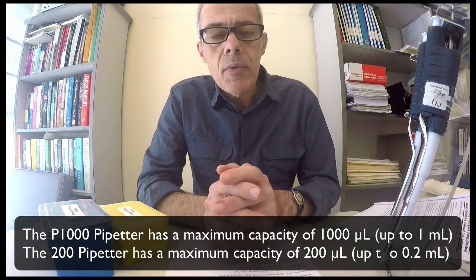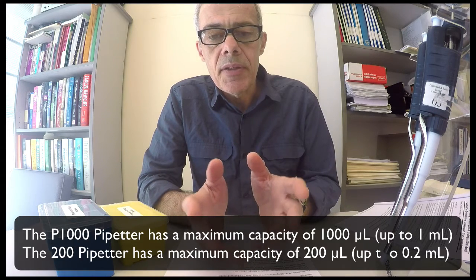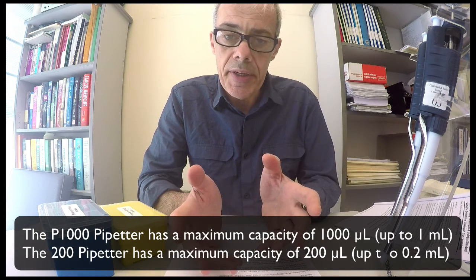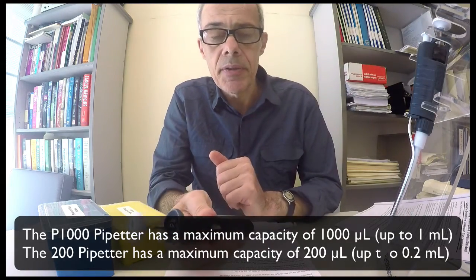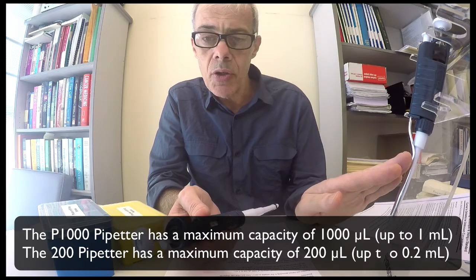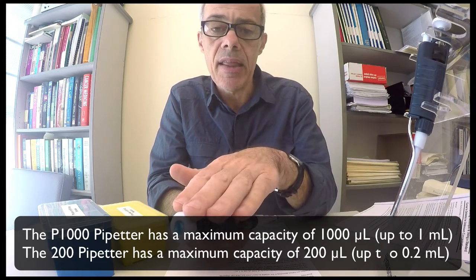So let's assume I want to dispense a volume of say 800 microlitres. Clearly I'm going to be using a P1000 because it's greater than 200 microlitres and it's less than a thousand microlitres.